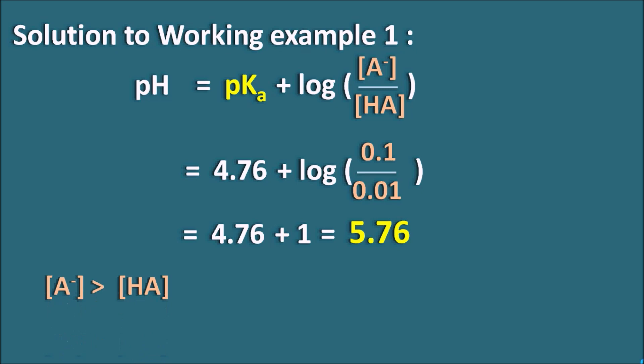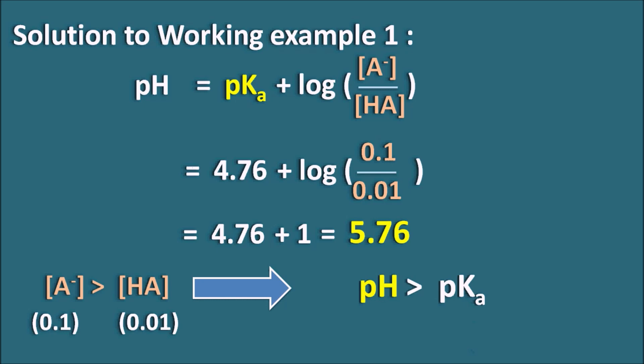Here we can observe that the concentration of A⁻ (0.1 molar) is greater than the concentration of HA (0.01 molar) — the ionized form is almost 10 times the unionized form. Accordingly, pH (5.76) is greater than pKa (4.76). When pH is greater than pKa, the weak acid mainly exists in the ionized form.